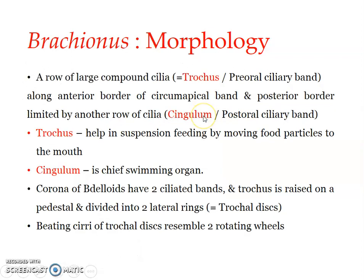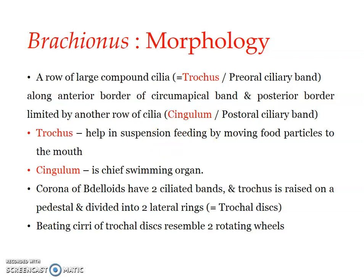In some rotifers, the corona is surrounded by a double ciliated ring known as the velum. It consists of an outer ciliary band known as the cingulum and an inner ciliary band referred to as the trochus. The cingulum and trochus together form the double ciliated ring that makes up the corona in many rotifers. The trochus helps in feeding by moving food particles to the mouth, creating a water current, while the cingulum is the locomotion or swimming organ.